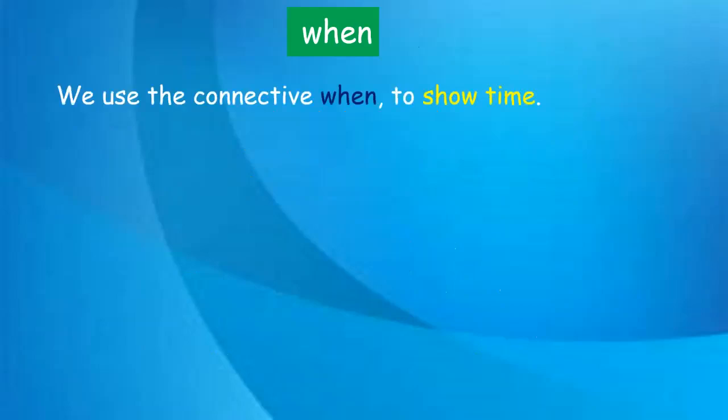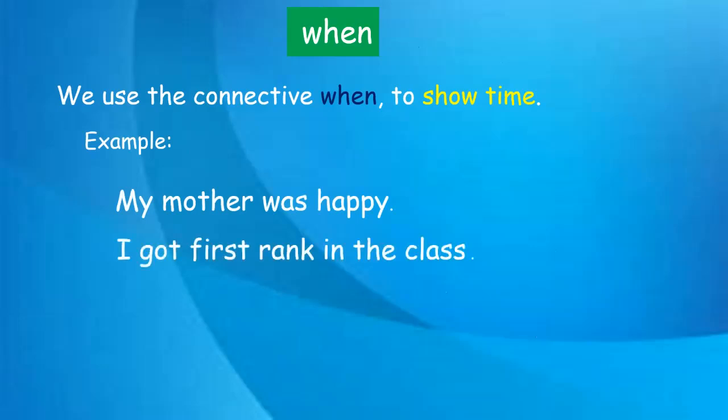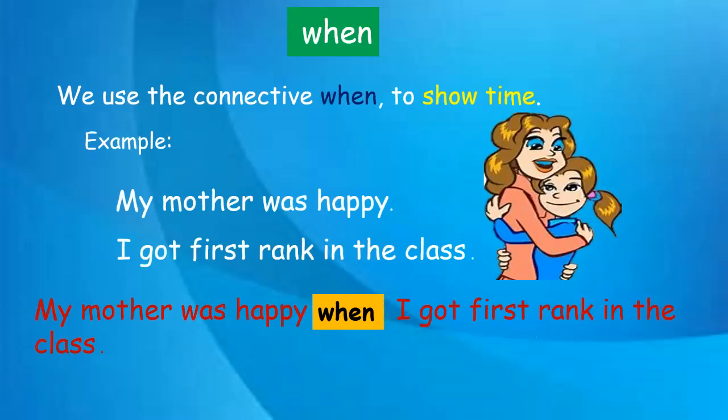Now let us write sentences with the connective 'when'. We use 'when' to show time. Example: 'My mother was happy.' 'I got first rank in the class.' We join them: 'My mother was happy when I got first rank in the class.' The first sentence is written as it is with a capital letter, then instead of the full stop we use 'when', and then the second sentence. Since 'I' follows, it is always written with a capital letter.